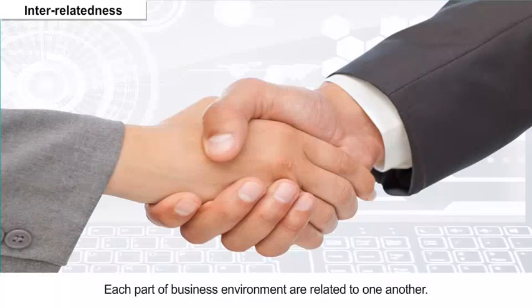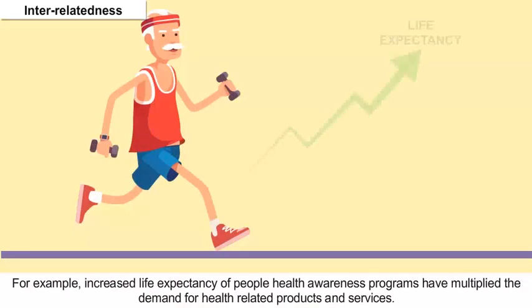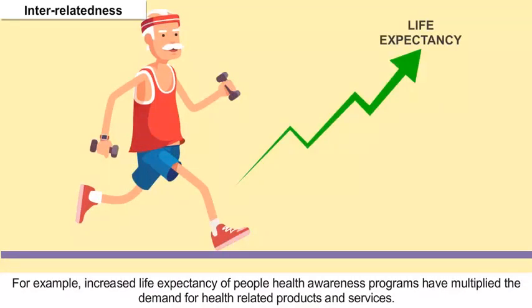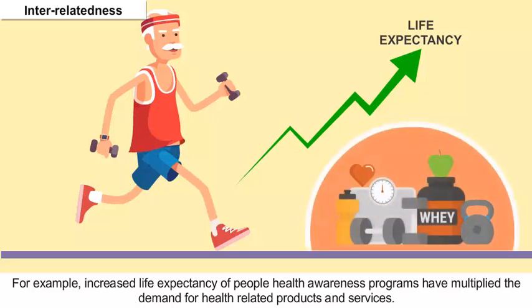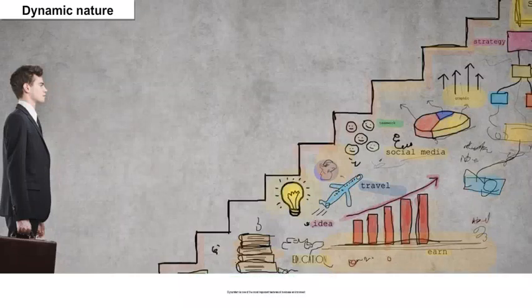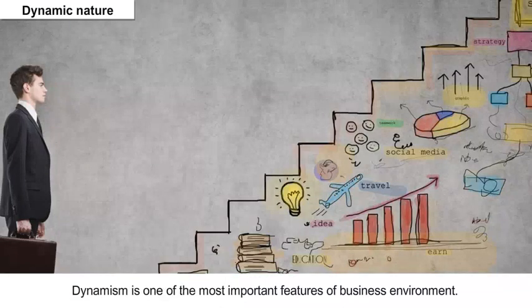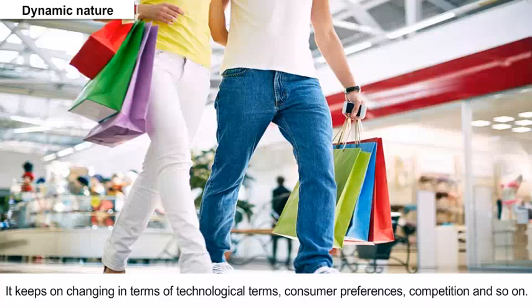Interrelatedness: Each part of the business environment is related to one another. For example, increased life expectancy of people and health awareness programs have multiplied the demand for health-related products and services. Dynamic Nature: Dynamism is one of the most important features of business environment. It keeps on changing in terms of technological developments, consumer preferences, competition, and so on.